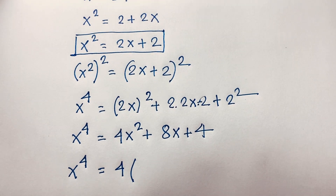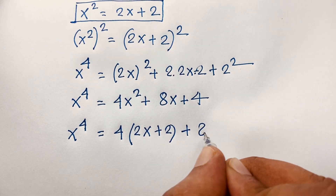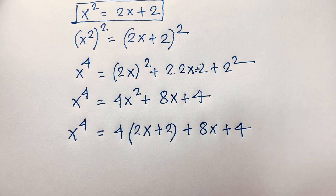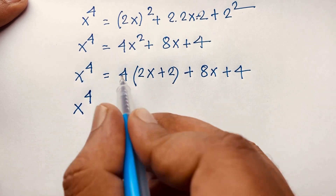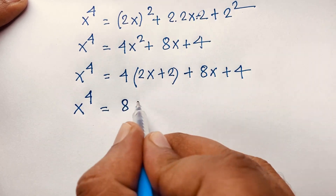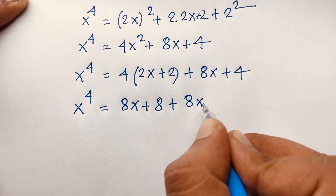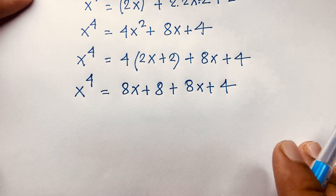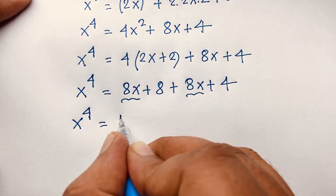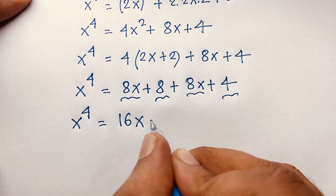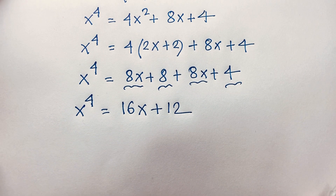x squared is 2x plus 2. I put this value in the equation. So it will be 4 times 2x plus 2, plus 8x plus 4. That gives 8x plus 8, plus 8x plus 4. x to the power 4 equals 8x plus 8x, which is 16x, and 8 plus 4 is 12. So x to the power 4 equals 16x plus 12.